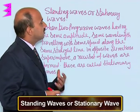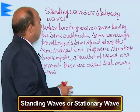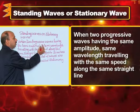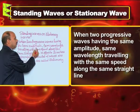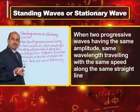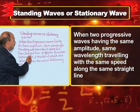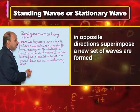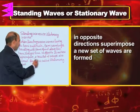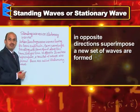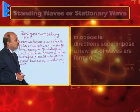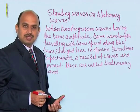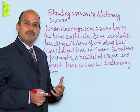Now let us see what are stationary waves or standing waves. When two progressive waves having the same amplitude, same wavelength, same time period and frequency, traveling with the same speed along the same straight line but in opposite directions superimpose, a new set of waves are formed - these are called stationary waves. This is the definition of a stationary wave. Let us now discuss the formation of a stationary wave in a string by graphical method.